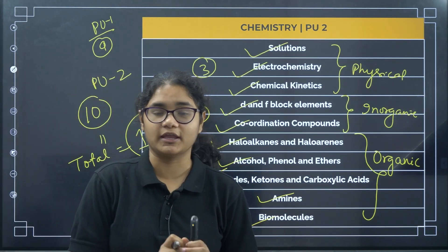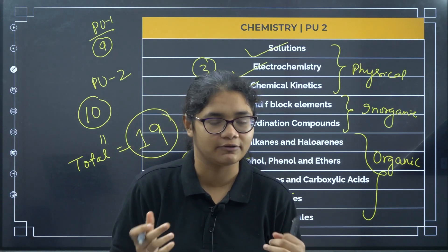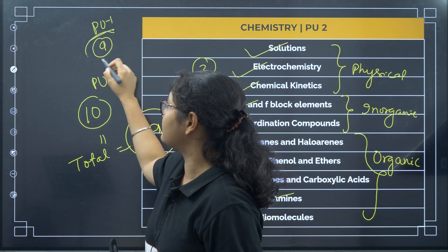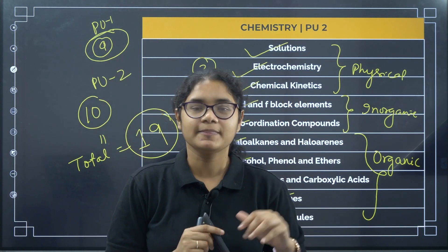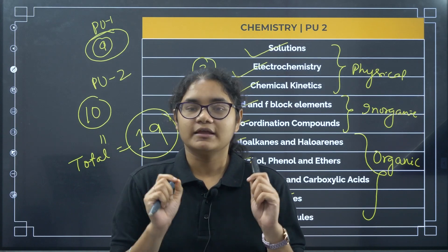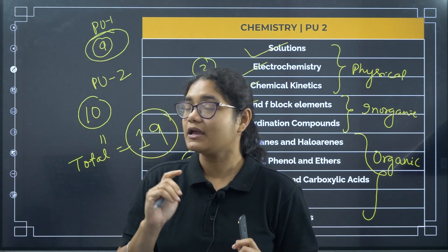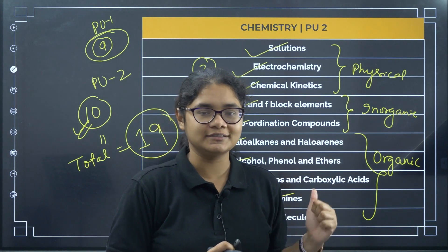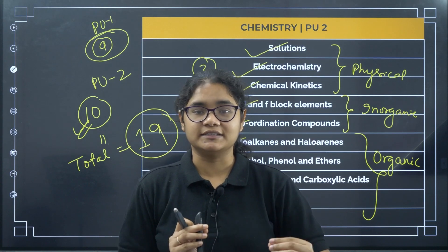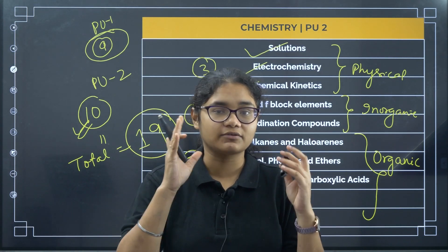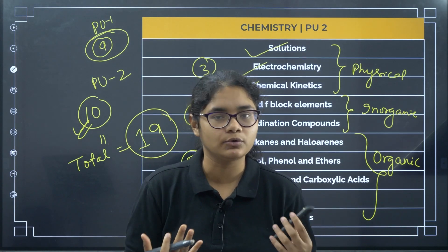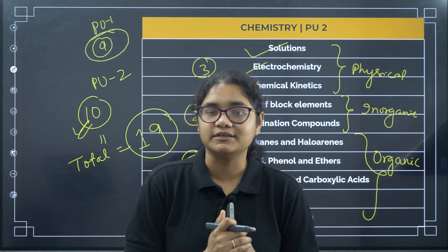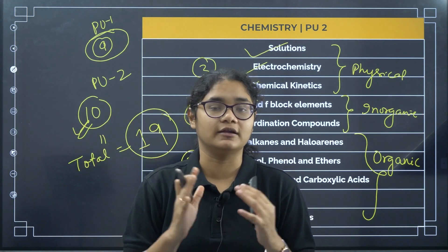Before you worry about studying all 19 chapters, note that the majority of questions are asked from these 10 PU2 chapters. So you need not worry — focus and give complete attention to your 12th syllabus. In your PU2, whatever chapters you are studying, study very clearly, understand all the concepts, and do proper revision so that you don't face difficulty at exam time.